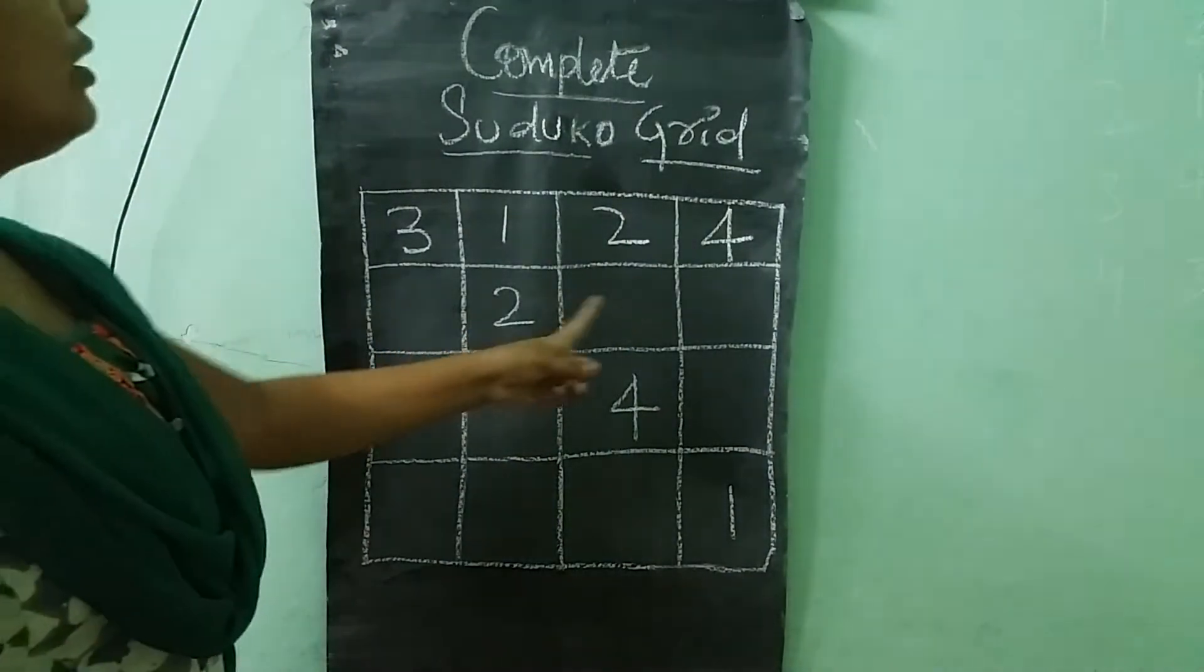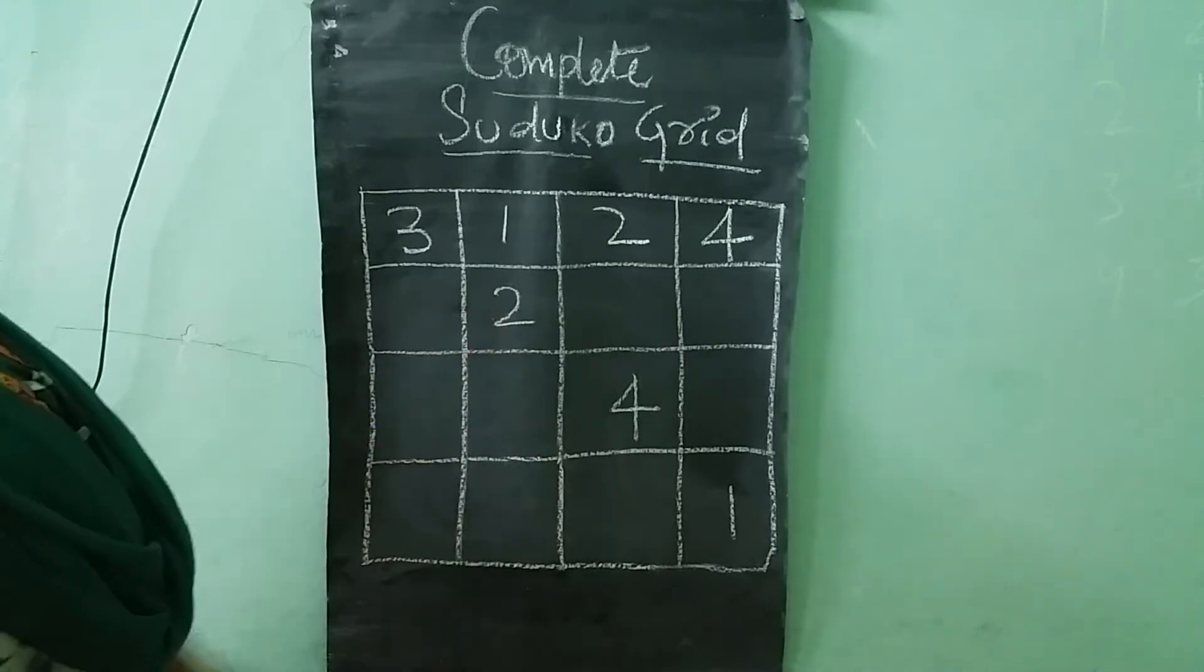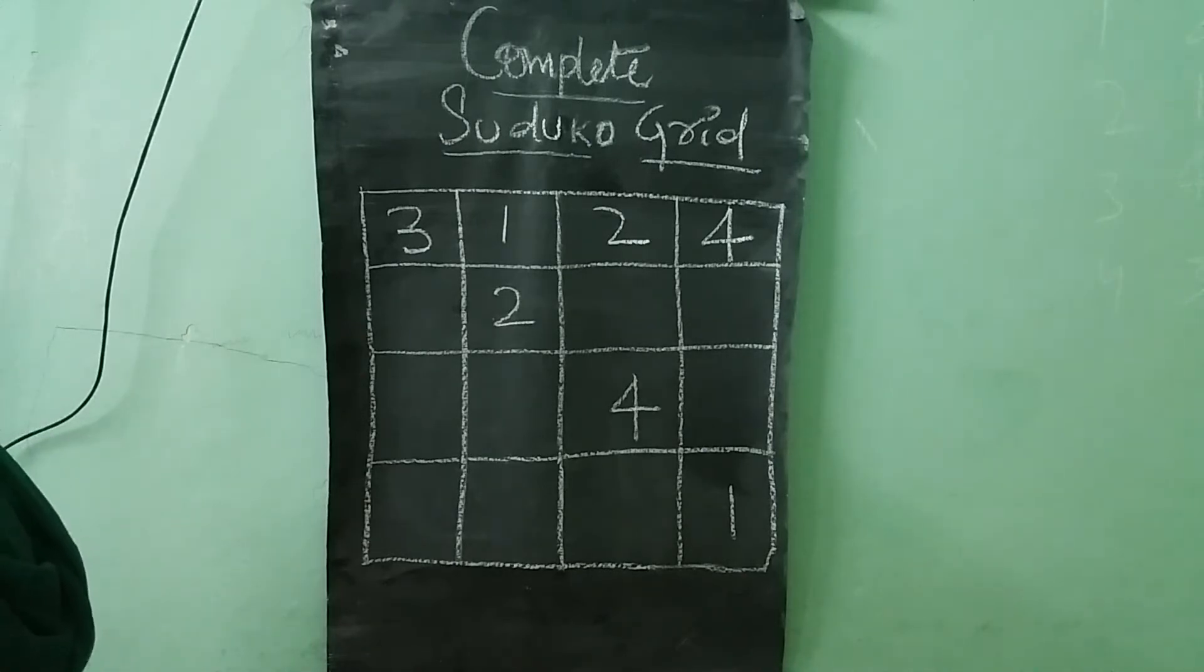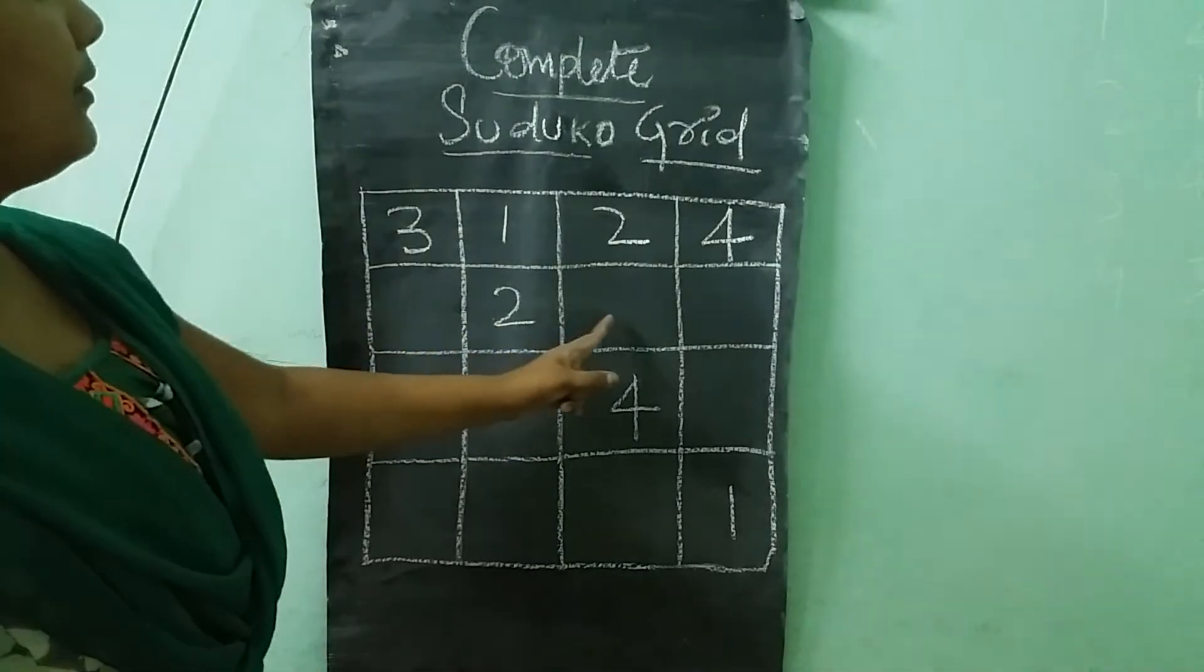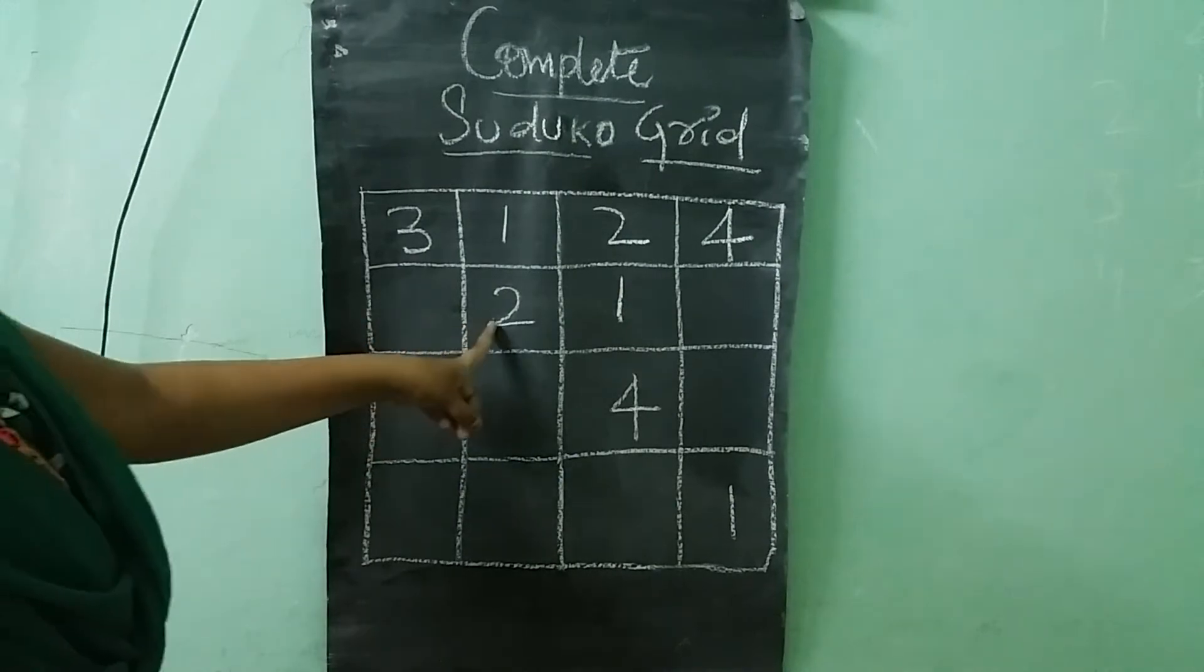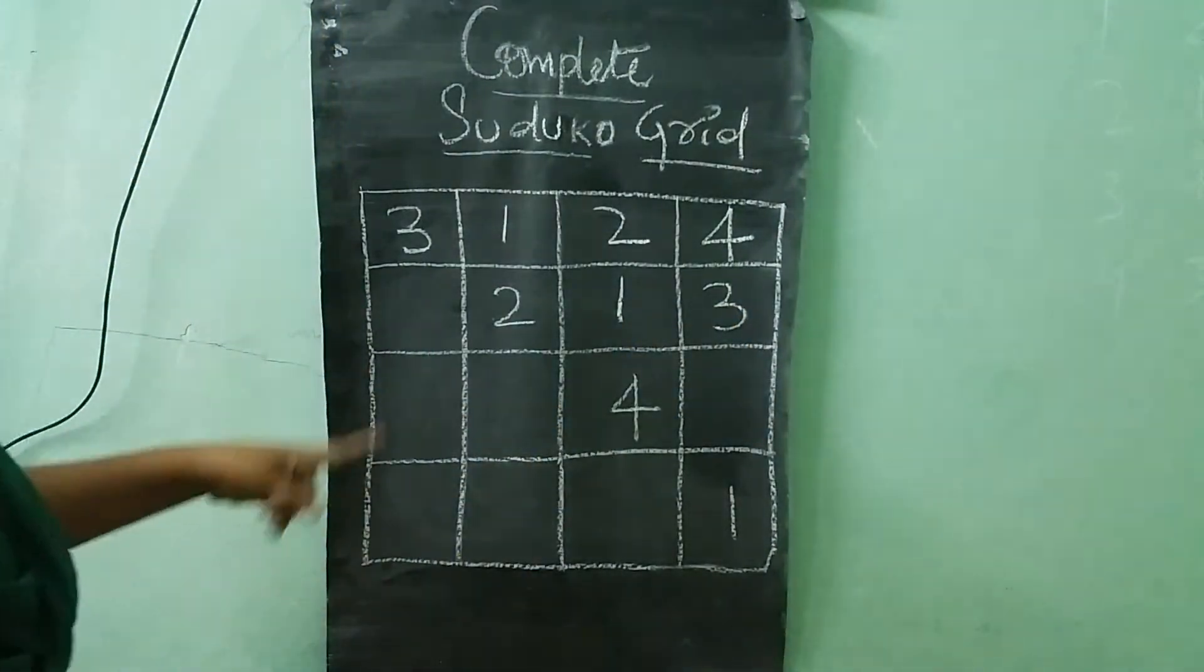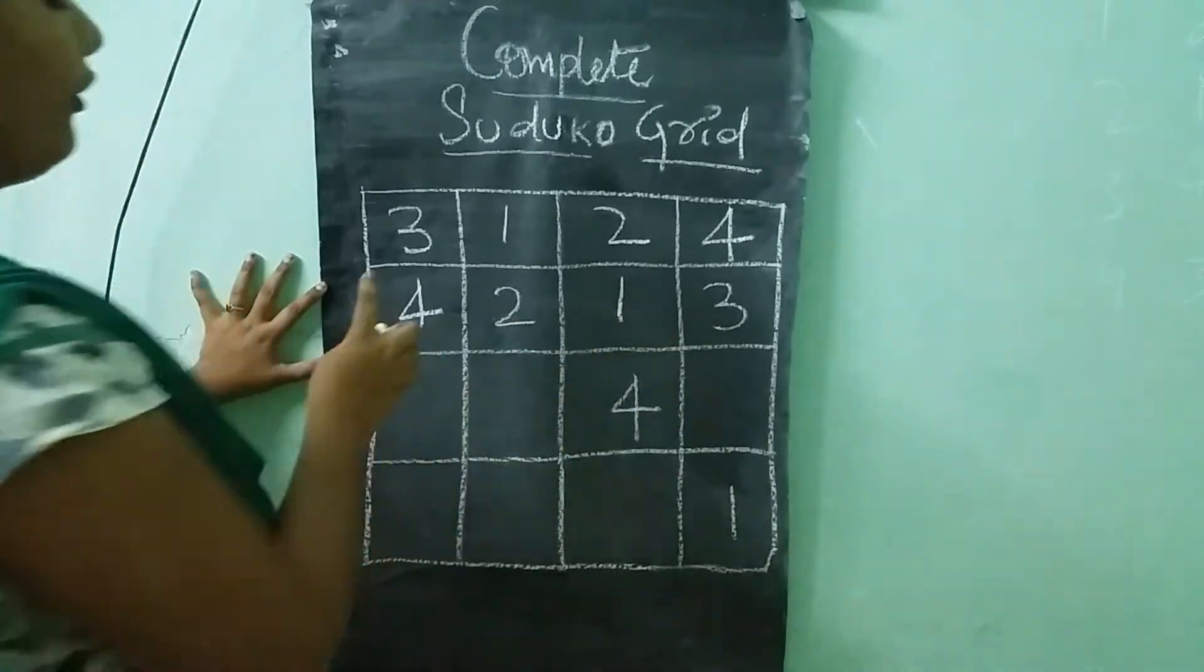In next row, what is this number? Here we have already 2 is there. So we need to write 1, 3, 4. Remaining 3 numbers. Where we need to write one number children? Here. Here I am writing 1. 2 is there already. So here I am writing 3. 1, 2, 3, 4.